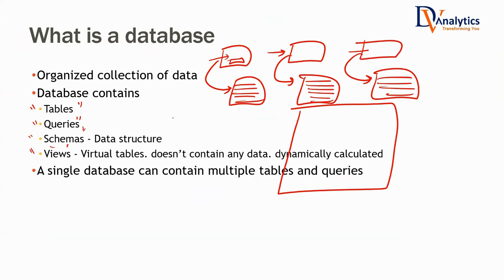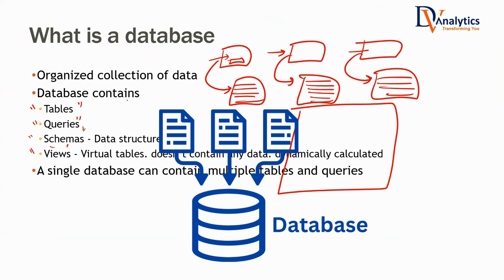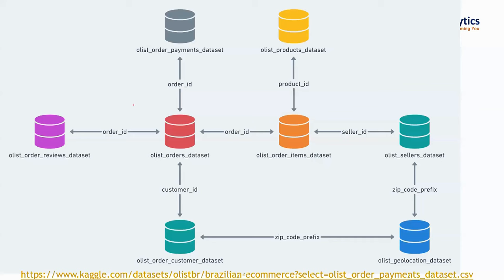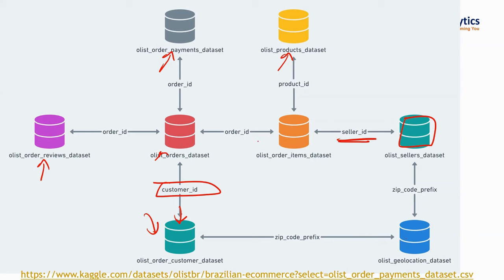From thousands of customers I get one customer's information, from the products table I get the product information. Typical examples of a database — this is an e-commerce database. We have an orders table, products dataset, payments information, customer information — using customer ID you can fetch the customer information. We have geolocation information using zip code prefix, and seller information using seller ID.